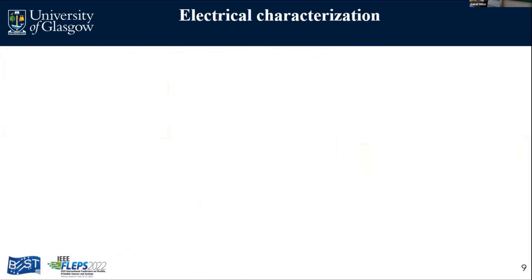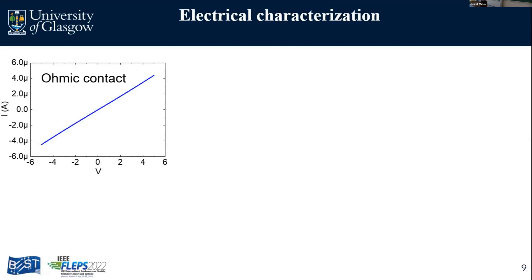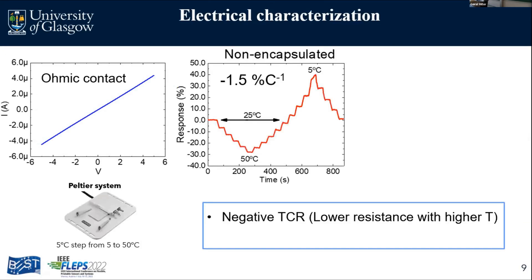Summarizing the fabrication: we have an SEM image of our aligned V2O5 nanowires bridging both electrodes, you can see the encapsulation layer covering the channel region. For electrical characterization, we start with a linear I-V curve showing ohmic contact between the nanowires and the fabricated electrodes. We can see the response of our temperature sensor as a function of temperature using a Peltier system, going from 5 to 50 degrees in 5-degree steps. We get a sensitivity of -1.5% change per Celsius, which is a really high value comparable to the state of the art for V2O5 nanowires. However, the sensor is not recovering to its initial position — we already observe hysteresis.